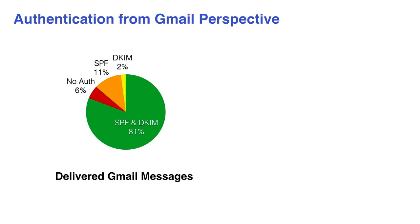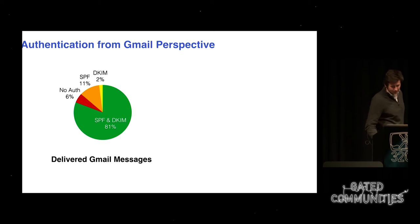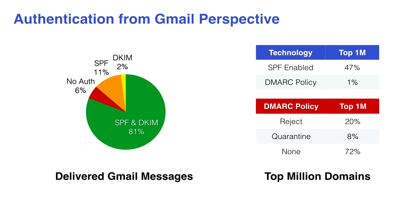Das ist aber dominiert von einer kleinen Anzahl sehr großer Provider. Wenn man sich die Top-eine-Million-Domains anschaut, hat man einen anderen Eindruck: keine 50 Prozent haben SPF aktiviert, und nur ein Prozent hat eine DMARC-Policy. Von diesen Domains sagen nur 20 Prozent, dass E-Mails rejected werden sollen, wenn das nicht übereinstimmt. Die meisten sagen, die Nachrichten werden zum Sender zurückgesendet als ungültige Nachricht.